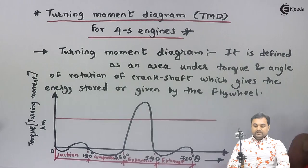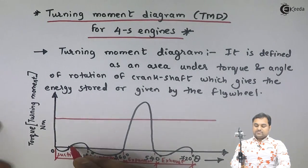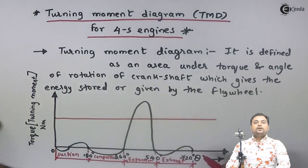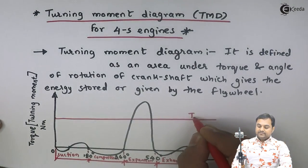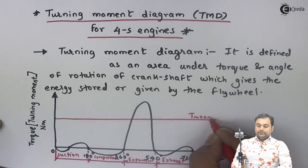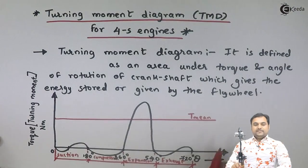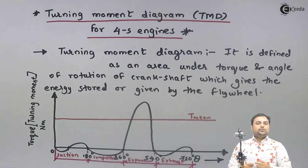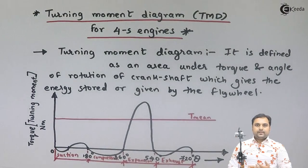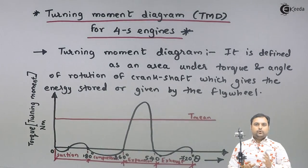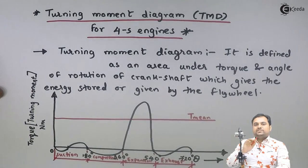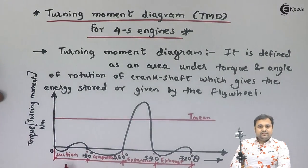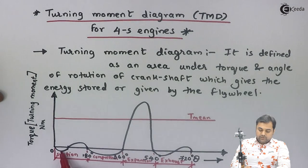The diagram shows some fluctuation. The red line indicates the mean torque, which is the torque the engine requires for its operation. This mean torque is always required by the engine to keep it running.